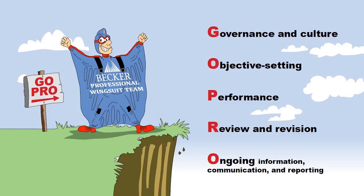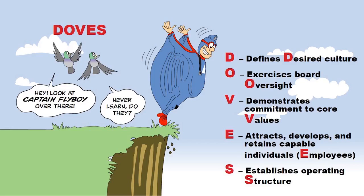So the first component, the G, is Governance and Culture. What you have to remember is that it's supported by five principles, and those five principles — that's the doves. So that's going to be the doves. Look at our beautiful doves there.